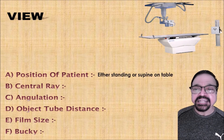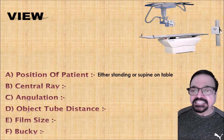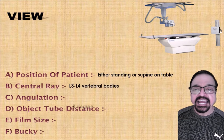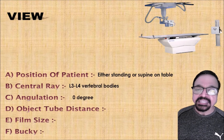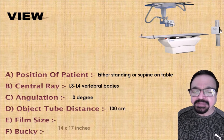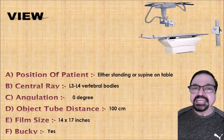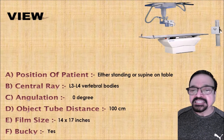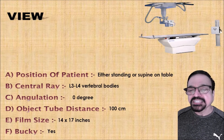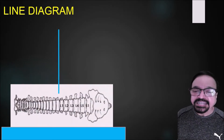Once it is decided, the patient is taken to the table. Radiographs can be taken in either standing or supine position depending on the indications and the details the clinician requires. The angulation is 0 degrees, the distance is 100 centimeters, film size is 14 by 17 — the maximum size we use — and a bucky is always required for CR or conventional systems. For DR, there is no question of a bucky. This is the line diagram.